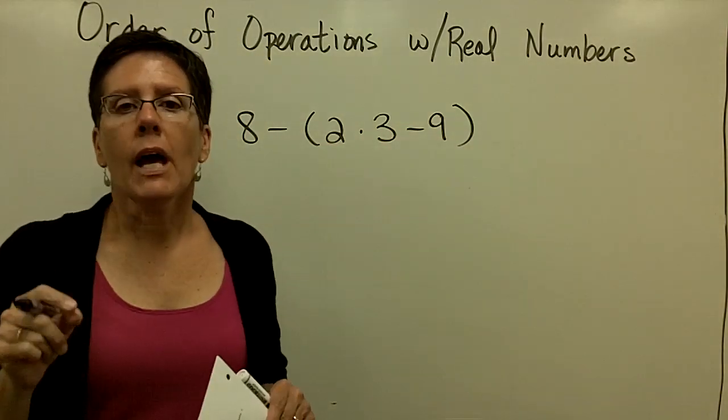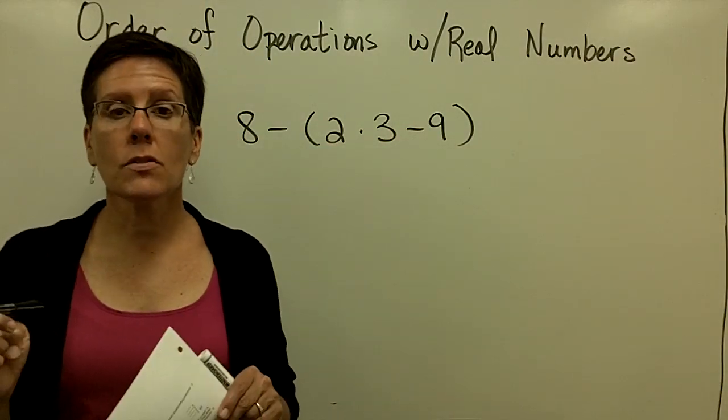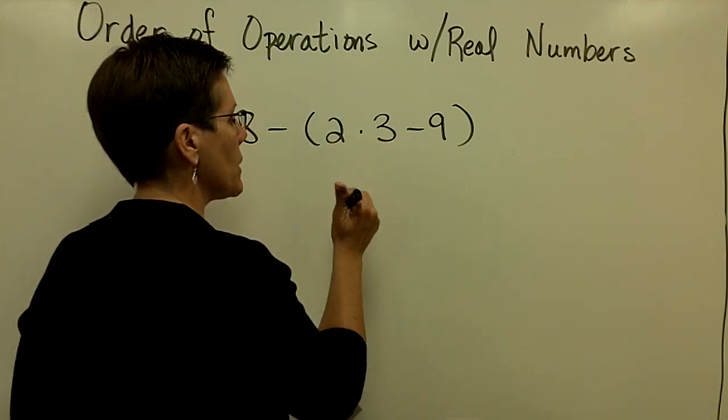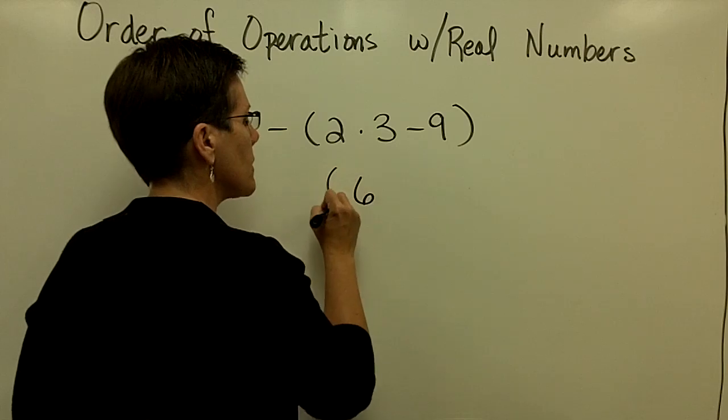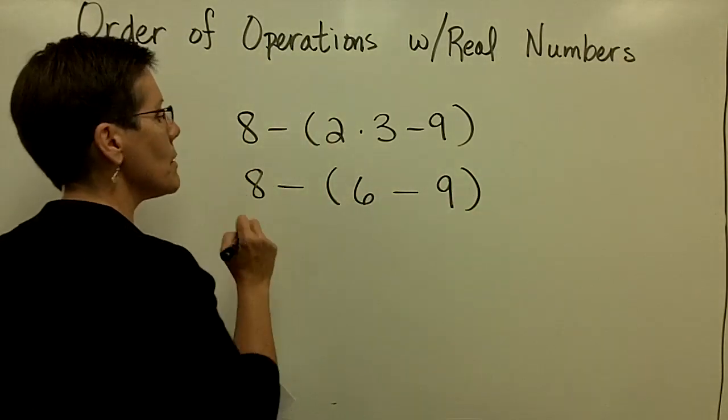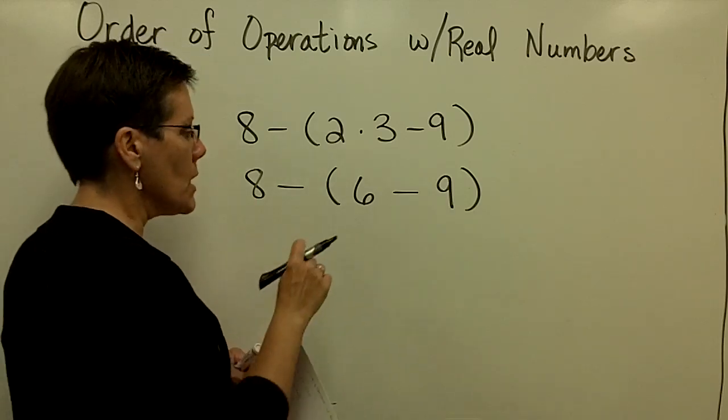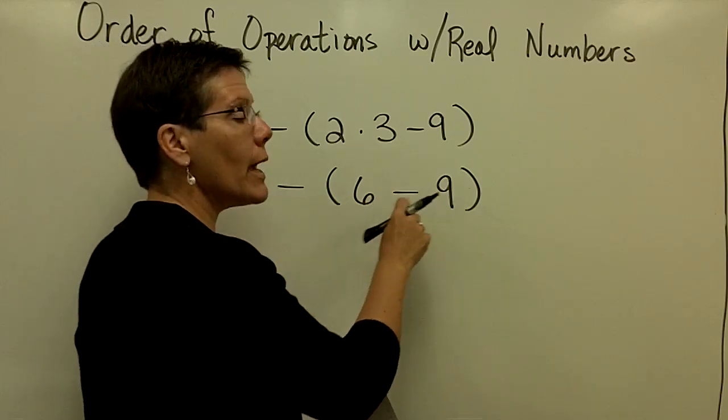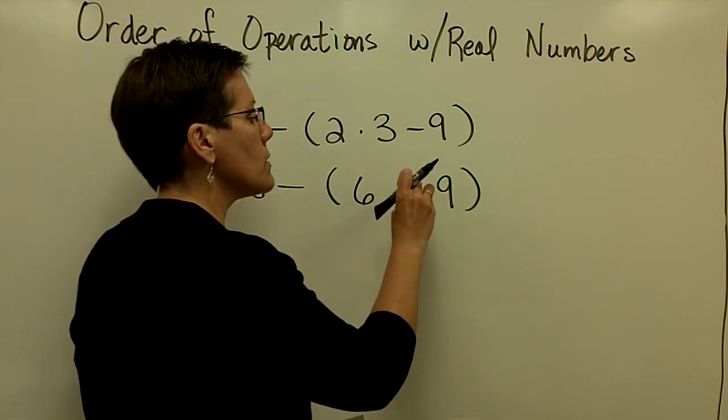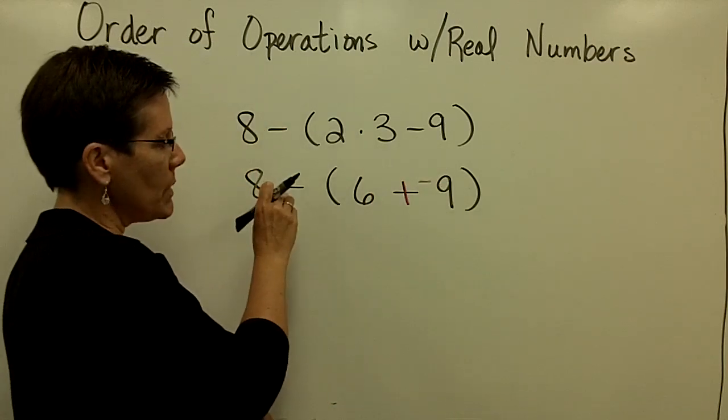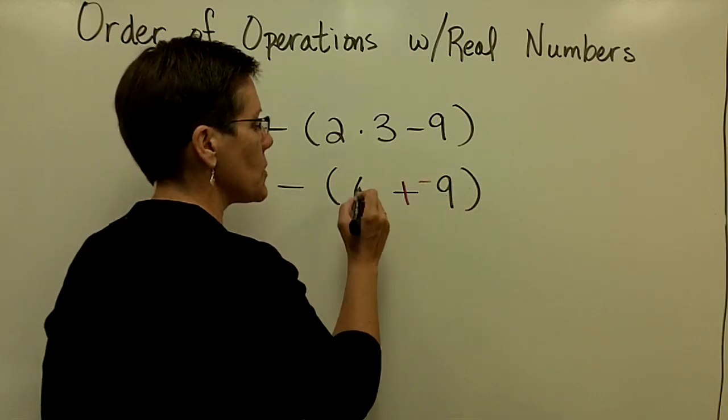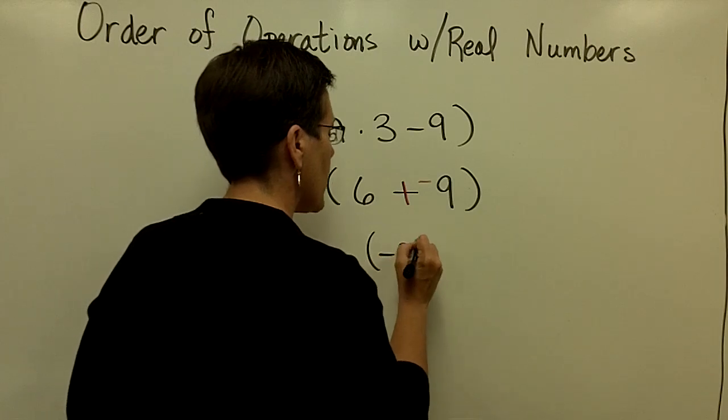Within that grouping symbol, I need to use order of operations which says to multiply before you subtract. So I'm going to take 2 times 3 and get 6 and then subtract the 9. Again, please notice I'm not taking any shortcuts, one thing at a time. When I take 6 and subtract 9, I hope you see that you get negative 3. But if you need to do 6 plus negative 9 equals negative 3, go ahead. You should not be distributing that yet. It is much easier to do what's in the parentheses first.